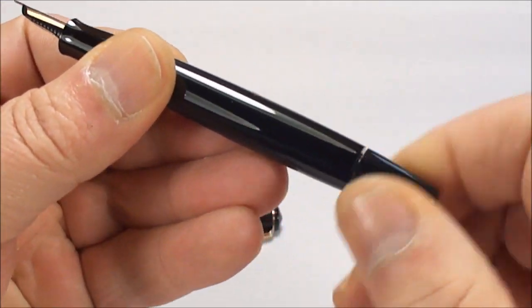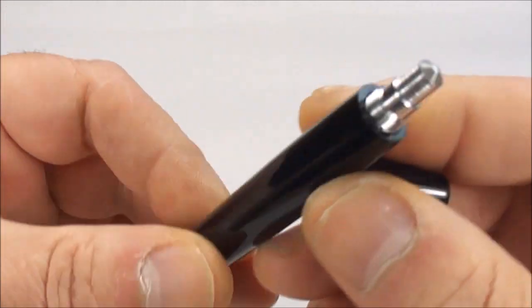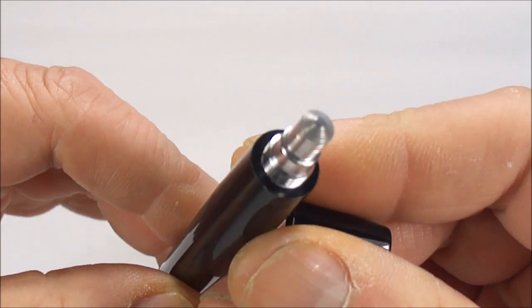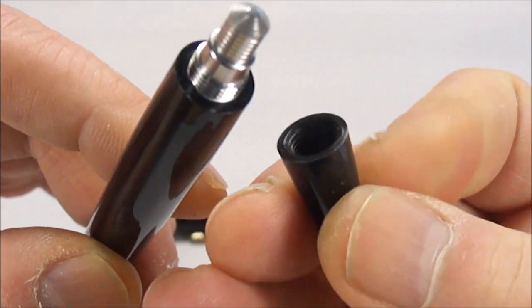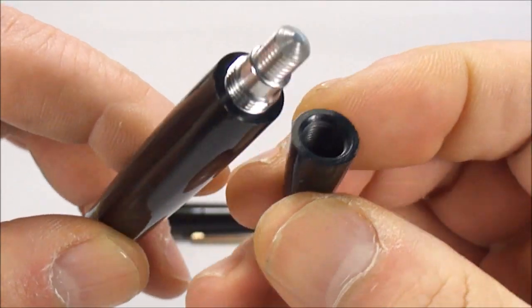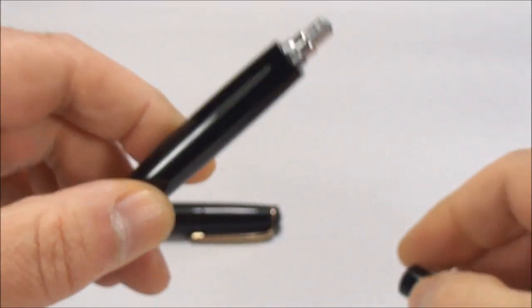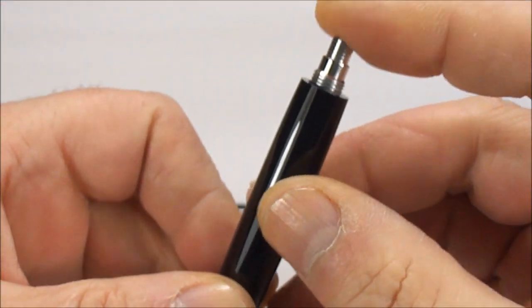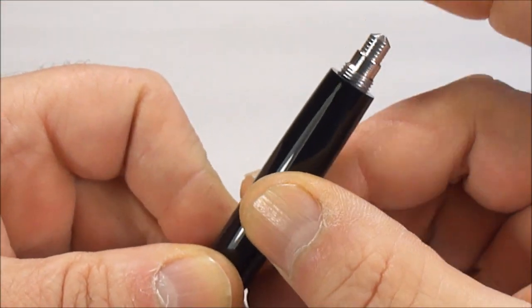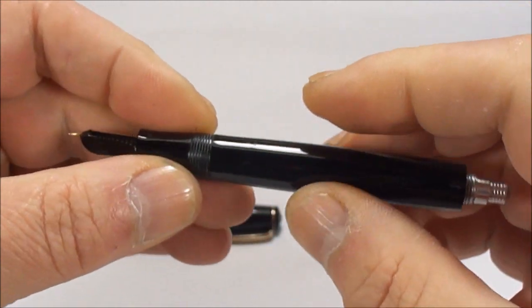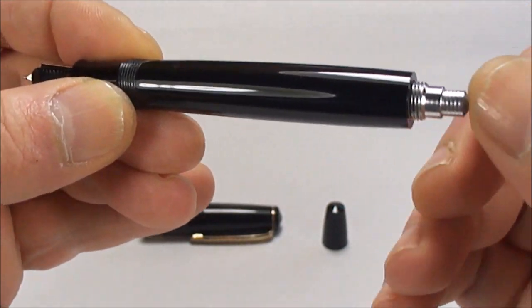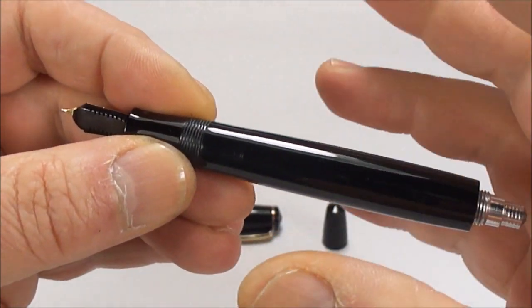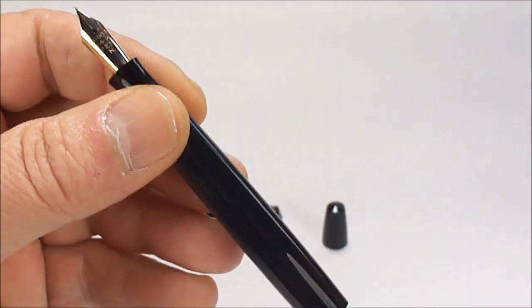Now, how does a pen fill? For you people that don't know, there we go. What you've got is what we term as the AF, or the aluminium filler. There's the blind cap for you. And what happens is we press on this button, like so. Inside, there's a bar that sort of compresses the sack inside. And when you take your finger off the button, the sack expands and the pen fills.